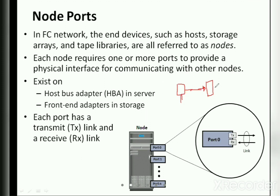The second is half-duplex — one person communicates while the other listens, then vice versa, like a walkie-talkie used by police. One person communicates, the information reaches the other person, and then the second person talks. The third is full-duplex, where transmitting and receiving happen simultaneously — in parallel — like in Fiber Channel ports. It is not waiting for one device to complete its task before the other begins.